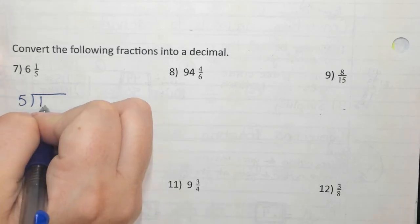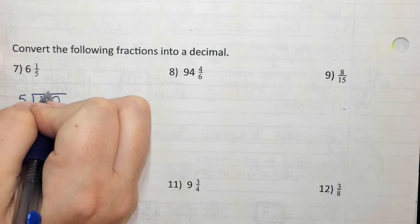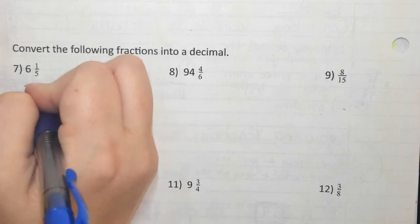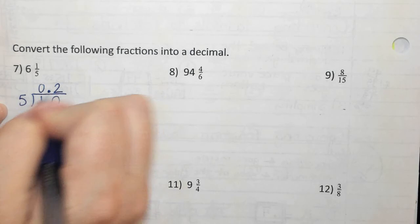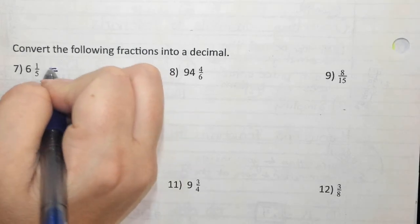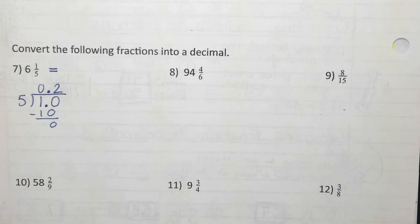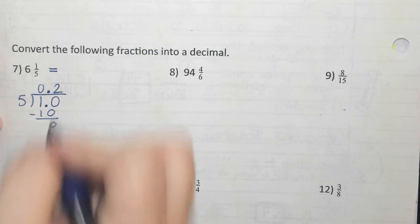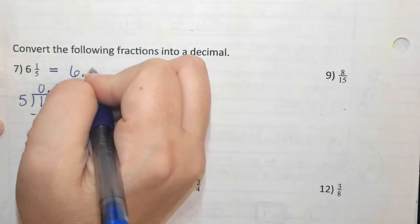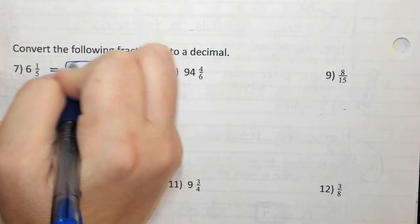I'm trying to make this a decimal, so I need to add a decimal and a zero. Make sure you raise that decimal to the roof. Five will go into one zero times. Five will go into ten twice. Two times five is ten — I get zero left over. I'm going to write my answer up here next to my fraction. What number is in front of my fraction? Six. So I put six and then a decimal. What was behind the decimal there? Two. So my answer is 6.2.